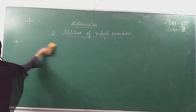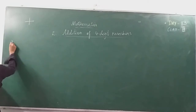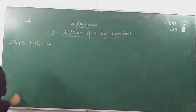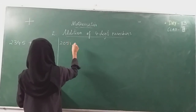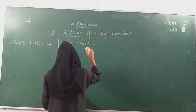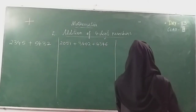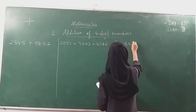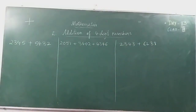Now we'll look at some other examples — two examples: one without carrying and one with carrying. The first question is 2345 plus 5432. Next we'll do a bigger example with three numbers: 2051 plus 3402 plus 4346. Then we'll go to a question with carrying: 2343 plus 6238. We'll have a look at these three questions today.